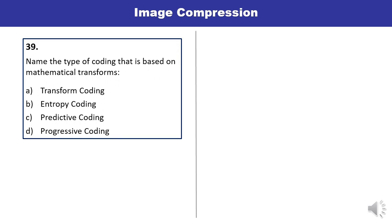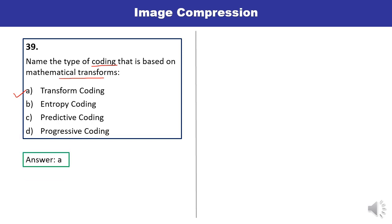Question 39: Name the type of coding that is based on mathematical transforms. Which type of coding is based on mathematical transforms? Transform coding is that one. This answer is correct.